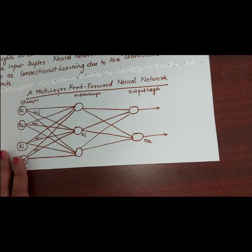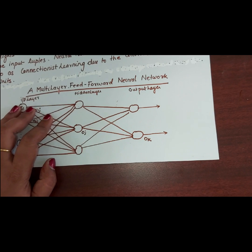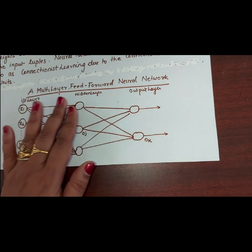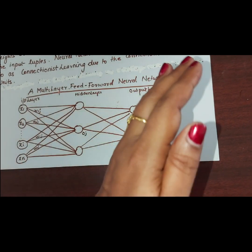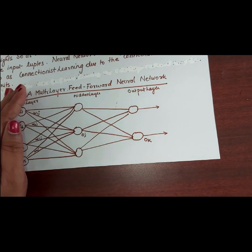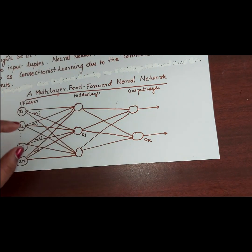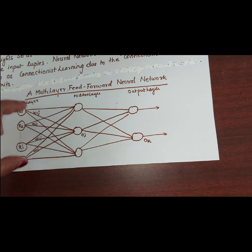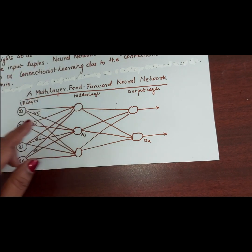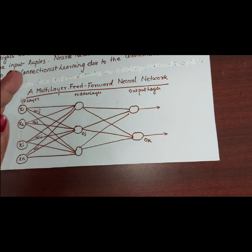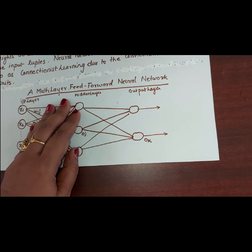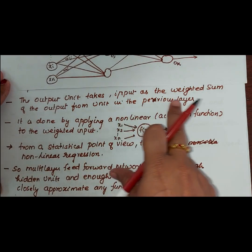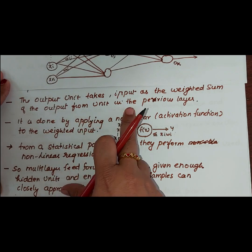This is a feed-forward network. Why is it called a feed-forward network? Because the weighted signal never cycles back — whatever you give it goes forward and never cycles back. The output unit takes the input as a weighted sum of the outputs from the units in the previous layer.